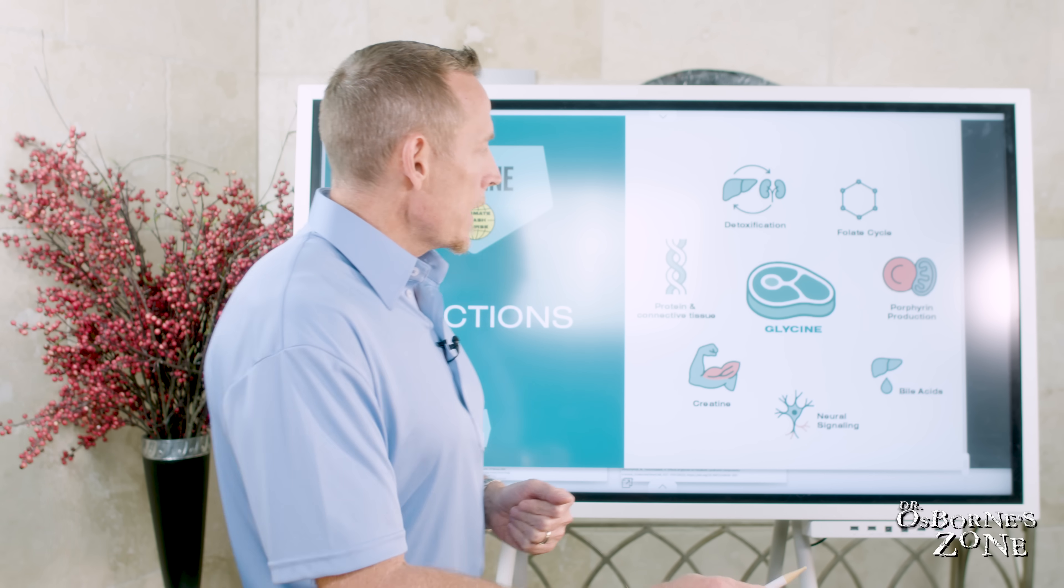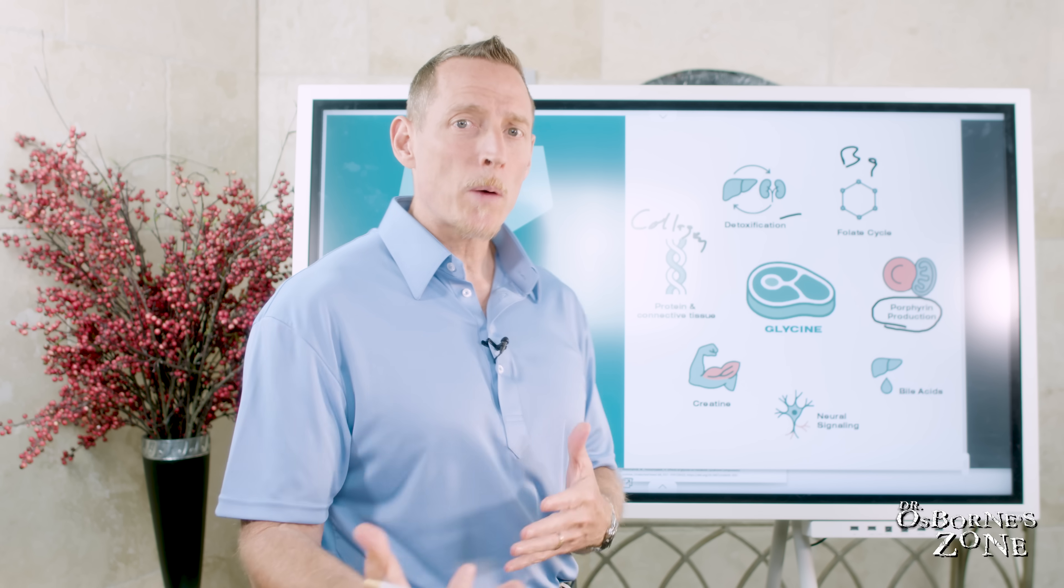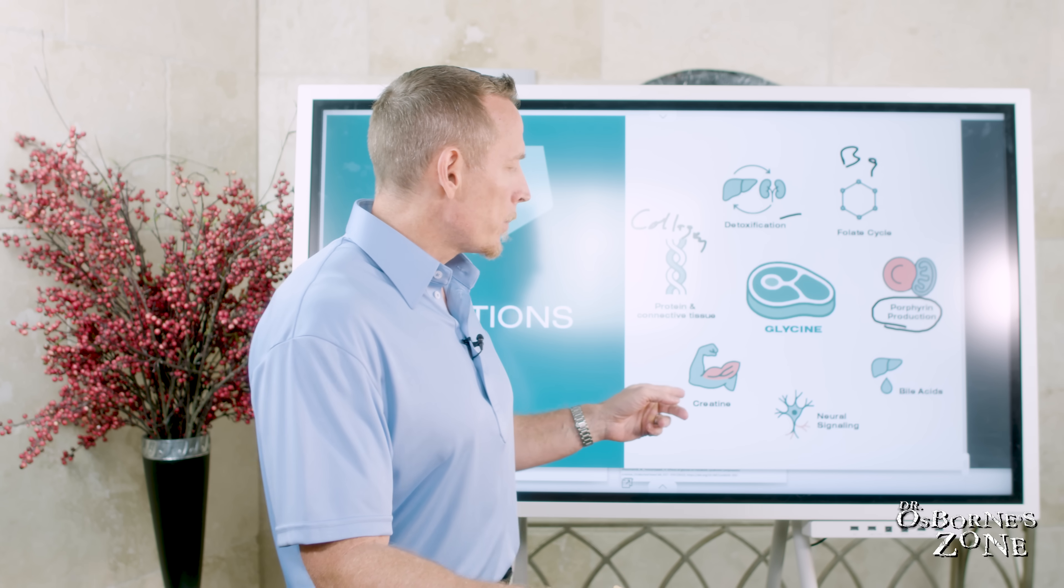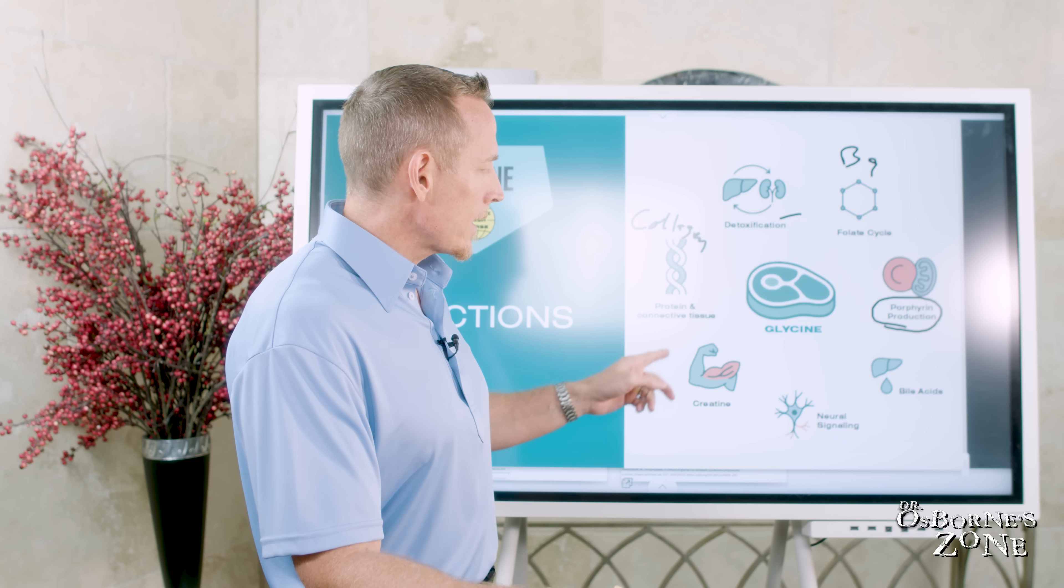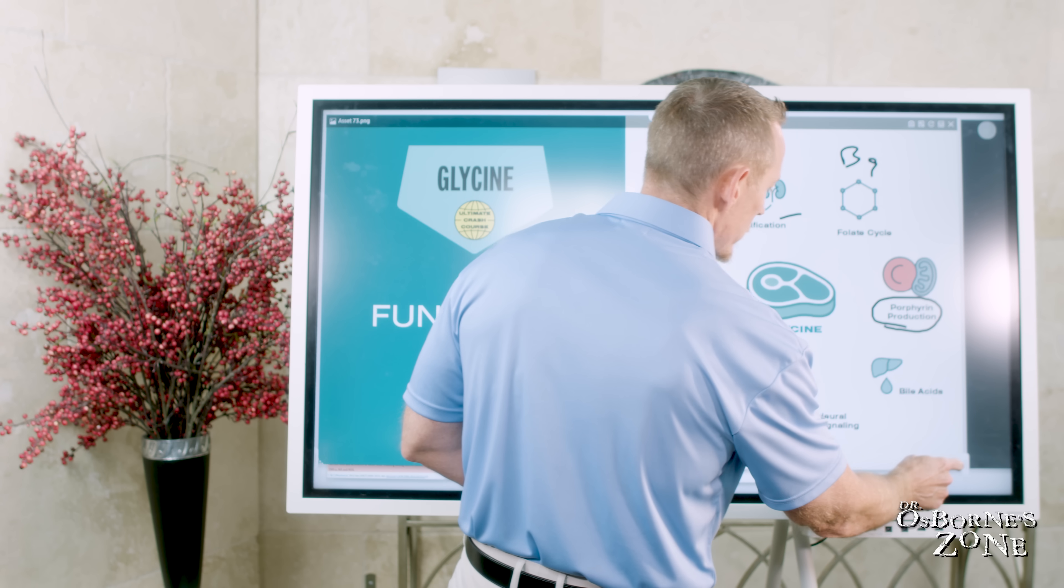Now, if we look at some of its functions, glycine plays such a central role in biochemistry in humans. Here's some of the basic functions: one in protein and connective tissue. As I mentioned before, this plays a role with the collagen detoxification in the liver, but also it does some of its own detoxification. It plays a role in helping you metabolize folate, which is vitamin B9. It plays a role in the production of proteins called porphyrins. It helps to conjugate bile acids along with taurine, so the two amino acids that are responsible for helping you properly produce bile acids, glycine being one of them. It helps to make creatine. You can't make it in your body without glycine. And then it also plays a role in nerve signaling or neural signaling.